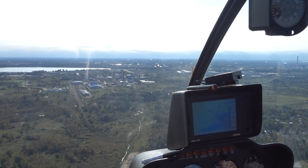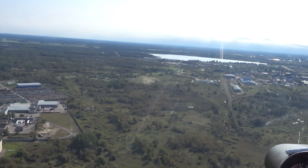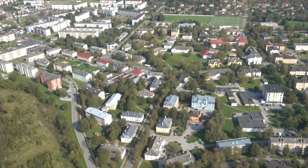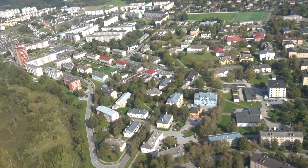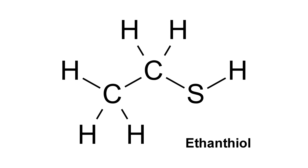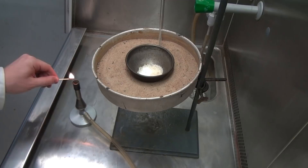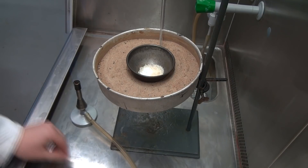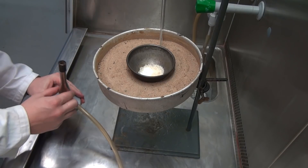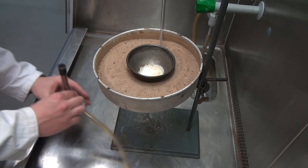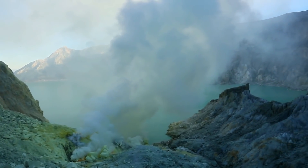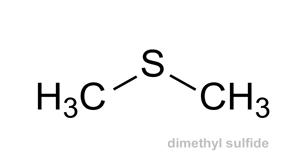Without a doubt, the leaders in this matter are thiols, also called mercaptans — organic compounds that have a thiol group in their composition. These substances have such a strong odor that one liquid drop can make a whole city district aware of its presence. Thiols, and in particular ethanethiol, are added to natural gas so that a person can sense a gas leakage and react in time. For example, ethanethiol can be detected by a person at a concentration of just 3 particles per 100 million air particles.